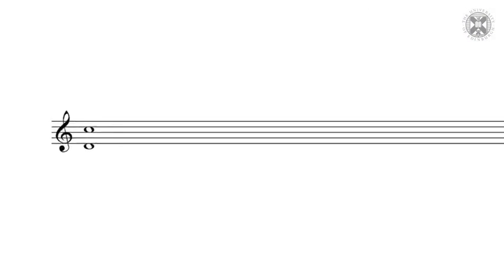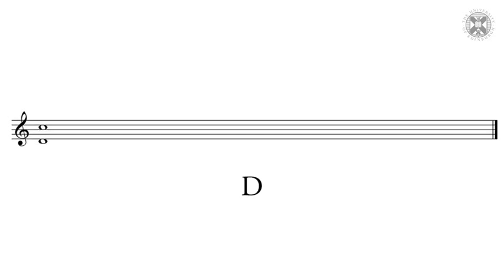On your screen you've got a treble clef with a D up to a C. The lower note is D, the upper note is C. Let's count up from D: D, E, F, G, A, B, C — one, two, three, four, five, six, seven. That's seven steps, so we know we've got some sort of a seventh.